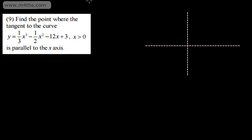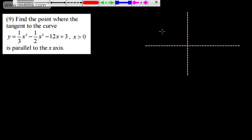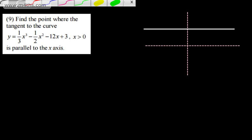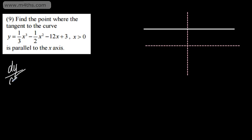Question 9: find the point where the tangent to the curve y is equal to 1 third x cubed minus 1 half x squared minus 12x plus 3, where x is greater than 0, is parallel to the x-axis. If we consider this — a tangent parallel to the x-axis means that dy by dx is going to be equal to 0. So dy dx equals 0 if parallel.